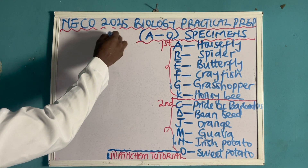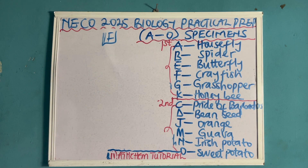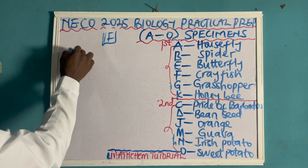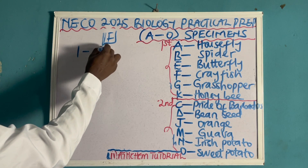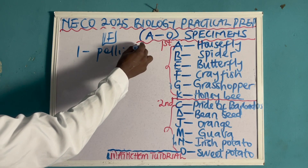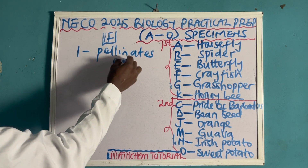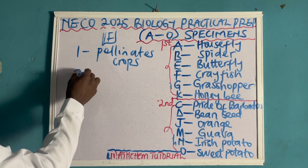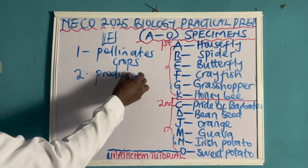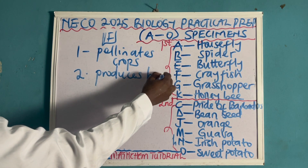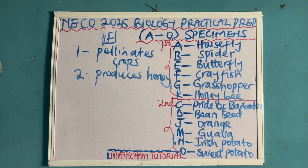For another one they can ask — let me name this one 1F — is that they can ask you to state two economic importances of specimen K, the honeybee. Number one, it is used to pollinate crops. Number two, it produces honey, which people can sell in order to make money.